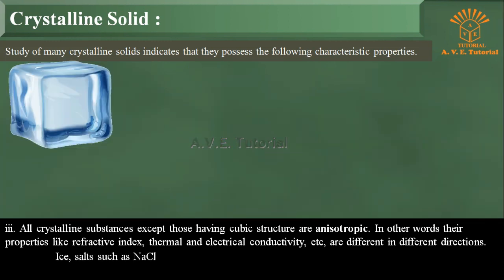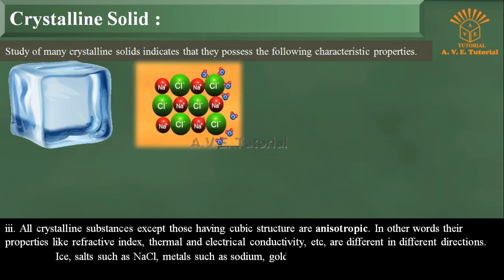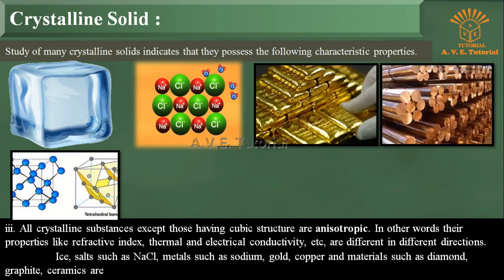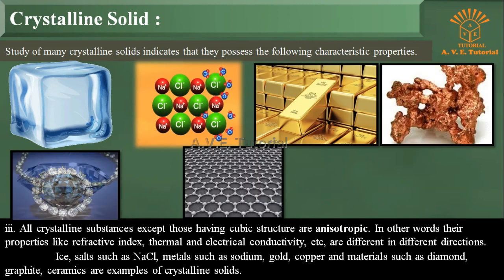Ice, salts such as NaCl, metals such as sodium, gold, copper, and materials such as diamond, graphite, and ceramics are examples of crystalline solids.